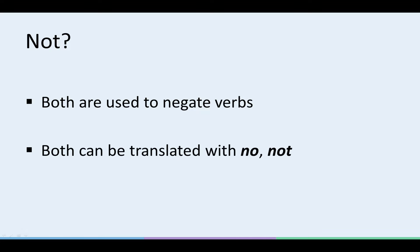So basically, both NI and NE are used to negate verbs, and both can be translated with the English words NO and NOT. So you can see how quickly the two can be confused, even though they are in fact very different. So how exactly are they different?